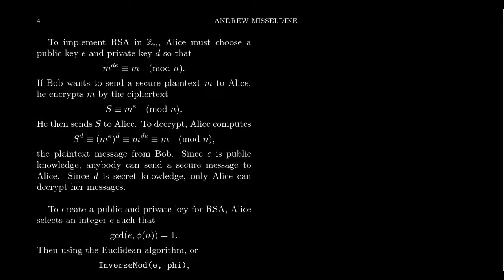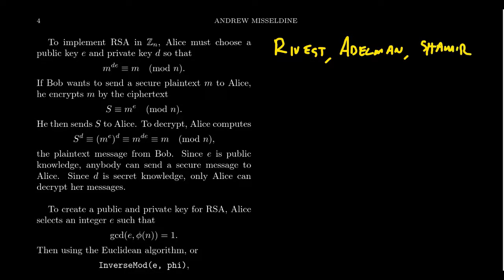RSA is a very common cryptosystem named after its three authors: Rivest, Adleman, and Shamir — for which RSA is an acronym. It's a bit interesting that the authors in a mathematical paper are listed in non-alphabetical order, so it really should be 'ARS,' but whatever — RSA is what we're going to stick with here.